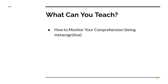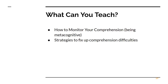Monitoring comprehension can also translate to writing instruction in terms of being aware of how you're communicating and how well that's going to serve your intended audience. Strategies to fix up comprehension difficulties go along with being metacognitive — if you know that your comprehension has failed in some way, what do you do about it? What kinds of strategies are in your toolbox to help you fix that up so that you comprehend the text?